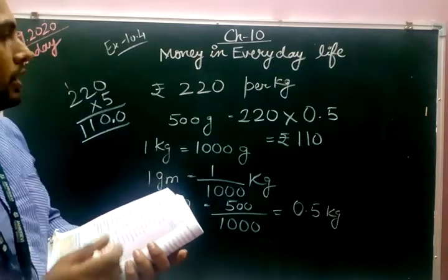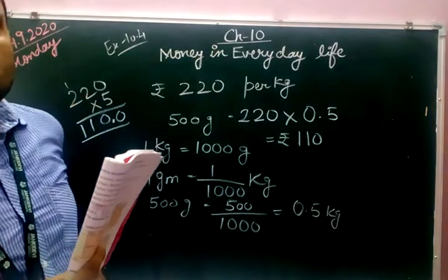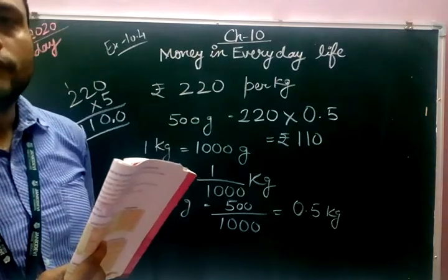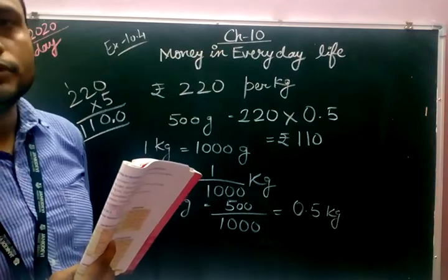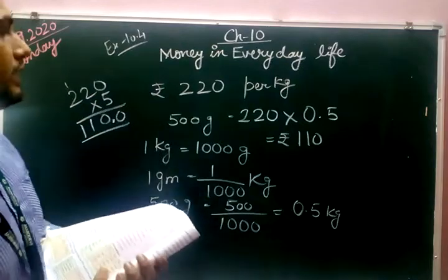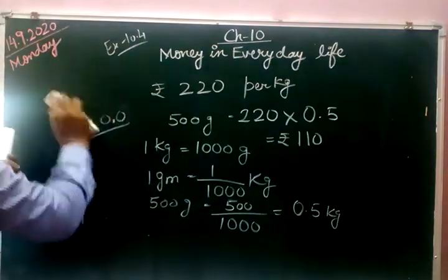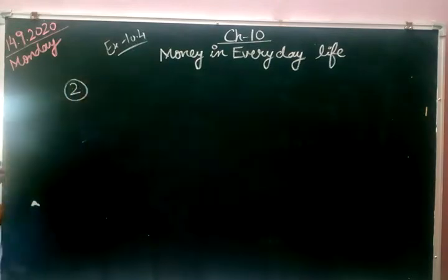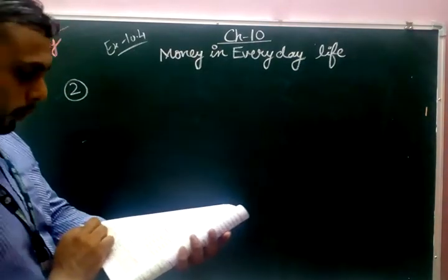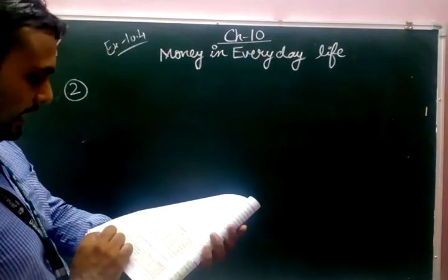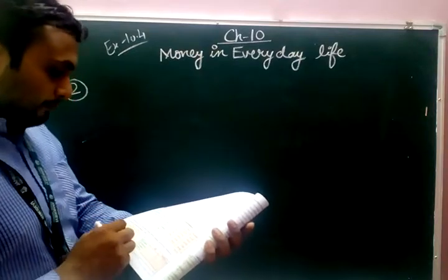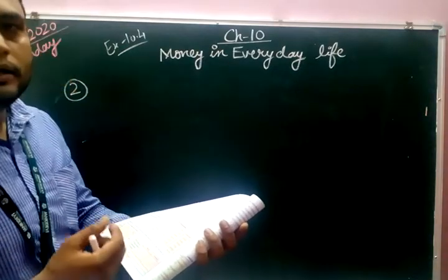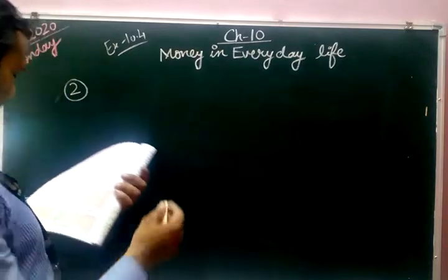In this way, you can find the cost of any given amount in grams — whether it is 300 grams, 400 grams, 500 grams, or 750 grams. Simply convert grams to kg and multiply by the rate. Now we are doing Question 2 of Exercise 10.4: calculate the cost of the purchase below, and find what change you would receive if you give the cashier 500 rupees. I will first prepare the bill.